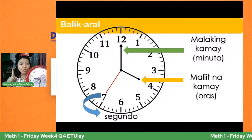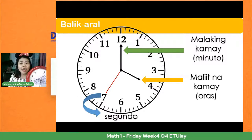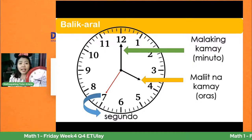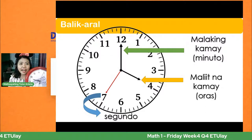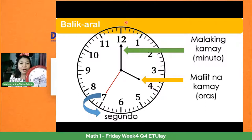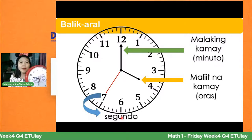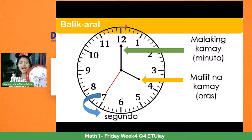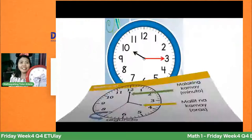Sa isang minuto, mayroon tayong animnapung segundo — 60 seconds in every one minute. Tingnan natin: ito ang isang minuto, ikalawa, ikatlo, ikaapat. Kada animnapung segundo, aandar yung ating maliit na kamay. Tatapat siya sa bawat guhit, sa bawat minuto. Sa pagbabasa ng oras, uunahin natin ang maliit na kamay.